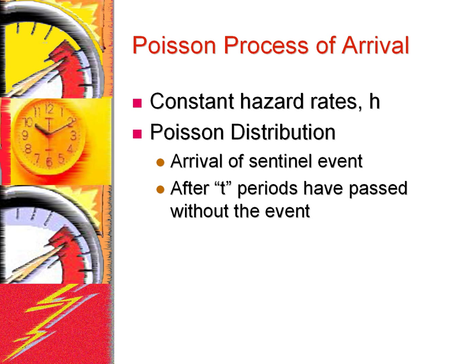Processes with a constant hazard rate have a Poisson distribution. Even when the hazard rate is not constant over time, it is a constant value at any particular time, and therefore the Poisson distribution can be used to measure it. In these circumstances, any sentinel event can be thought of as having a Poisson distribution and arriving for the first time after t periods of time. In this sense, the Poisson distribution allows us to estimate the probability of a sentinel event occurring in the next time period, given that it has not occurred so far.